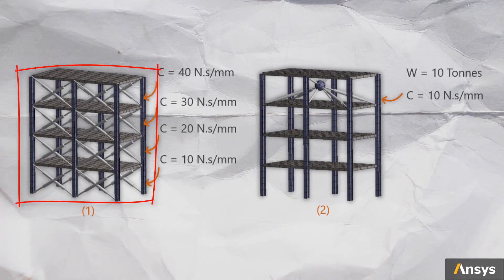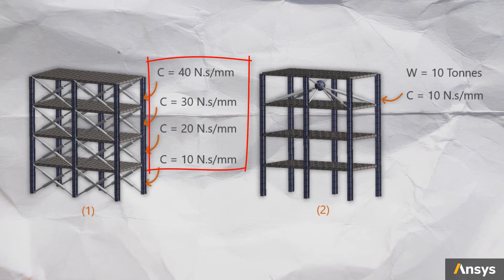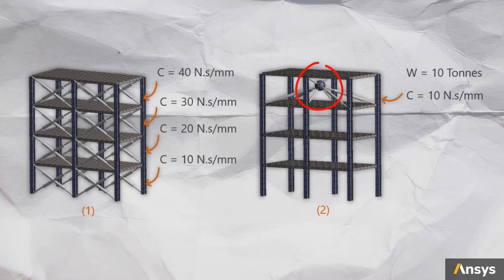Using this information, let us now install dampers in the structure using two different configurations. In the first configuration, we'll add dampers to all the floors of the structure. Since the top floors need more damping compared to the lower ones, we'll use dampers with higher damping coefficients on top. In the second configuration, we'll add a 10-ton tuned mass to the top floor and attach some dampers to it, without adding dampers to the rest of the structure.